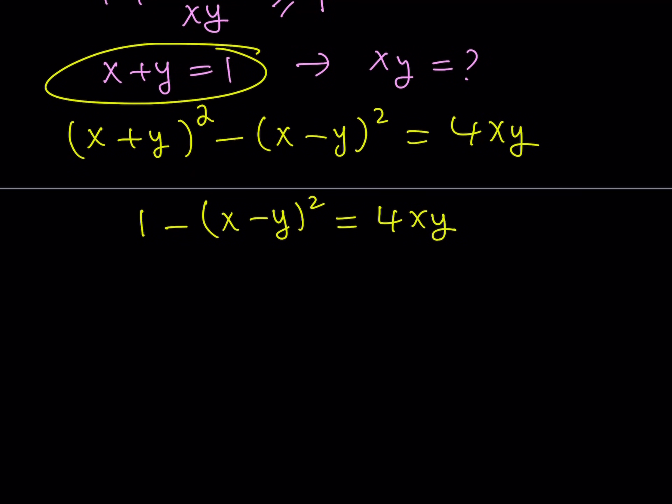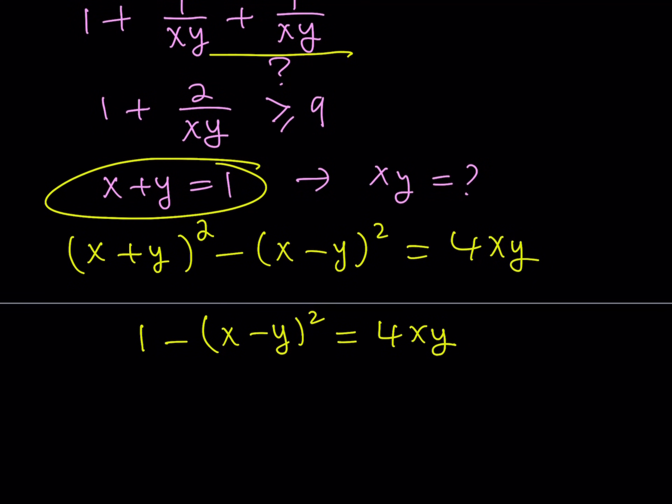And this gives us 1 minus the quantity x minus y squared is equal to 4xy. Okay, great. Now, how am I going to use this inequality? Well, notice that in my expression here, I'm trying to prove that this is greater than or equal to 9. So, I have the expression xy. And I have the expression xy here as well. So, that's helpful. But what am I going to do with the x minus y quantity squared? Well, remember that that's a non-negative quantity. So, what is that supposed to mean?